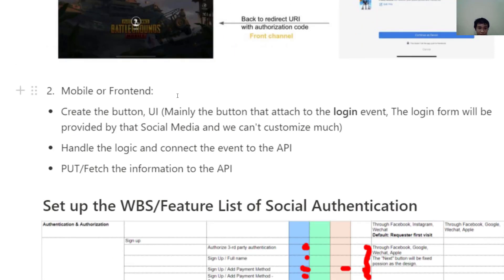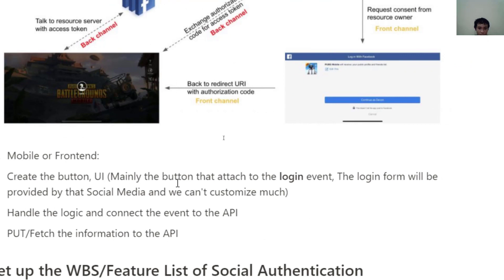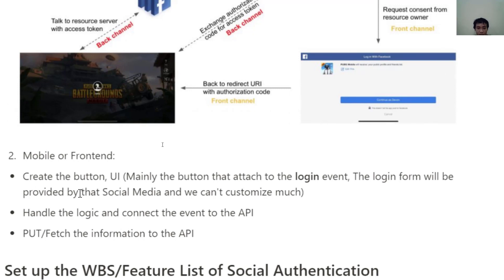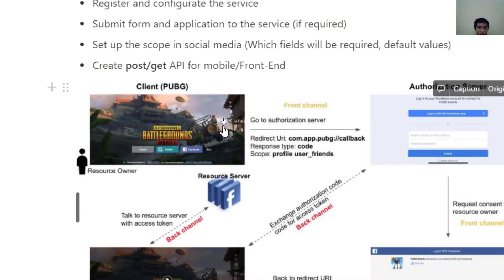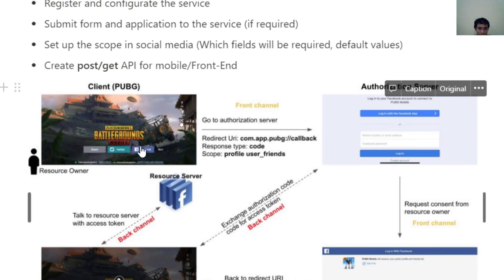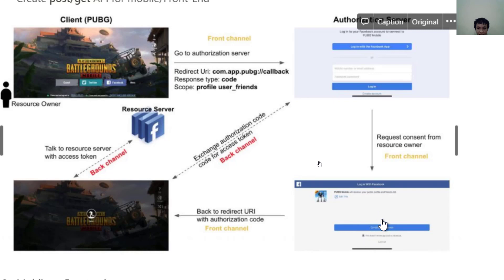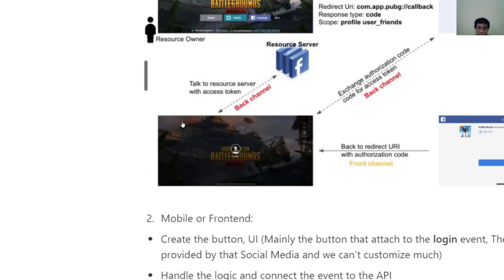For mobile and front-end developers, the task is mainly to create the button in the UI and attach it to the login event. Most social media providers handle the login form themselves, so developers don't need to implement the whole thing. For example, in the PUBG game, they only implement the Facebook button — when clicked, it opens a form handled entirely by Facebook, and once authorized, it goes directly to the game.